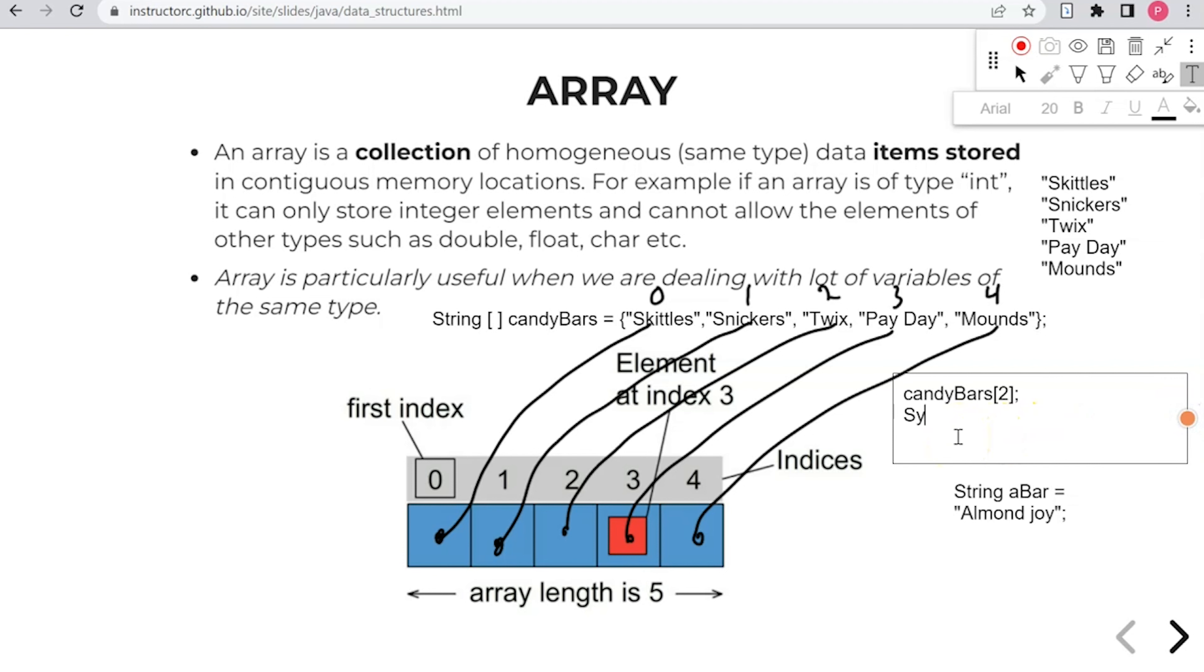And so if we were to do a system.out.println candy bars at position two, that would output Twix. And so that's just a brief overview of arrays.